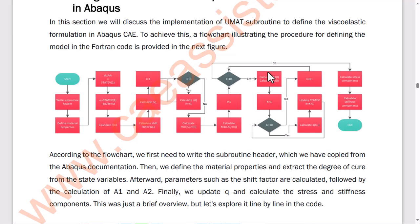Afterward, parameters such as the shift factor are calculated, followed by the calculation of A1 and A2. Finally, we update Q and calculate the stress and stiffness components. This was just a brief overview, but let's explore it line by line in the code.